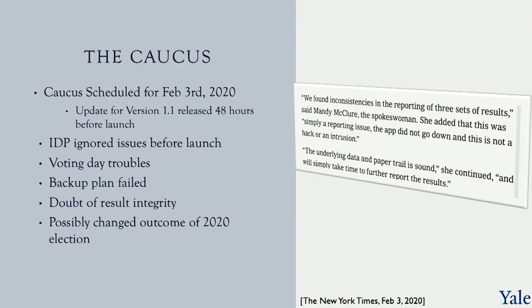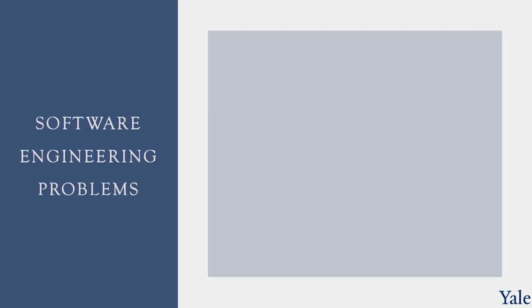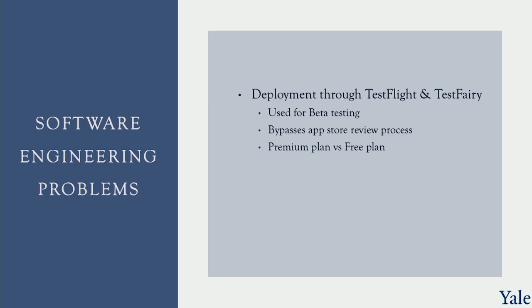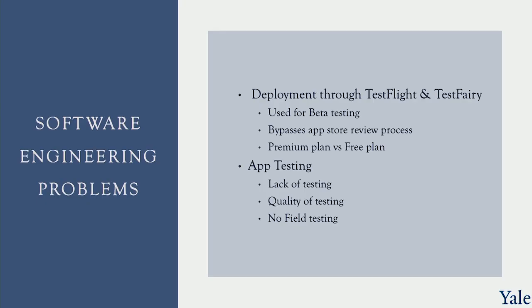Right from the outset, there were software engineering problems. The app had been deployed through TestFlight on Apple and TestFairy on Google, which are supposed to be used for beta testing and not actual production deployment. This allowed them to bypass App Store review processes, which did speed things up, but they had used the free plan instead of the premium plan, which drastically limited the number of users allowed to only 200. Furthermore, in terms of app testing, there was a lack of quality testing and actually no field testing at all, which is particularly important considering that many parts of Iowa are rural and may have had spotty internet.